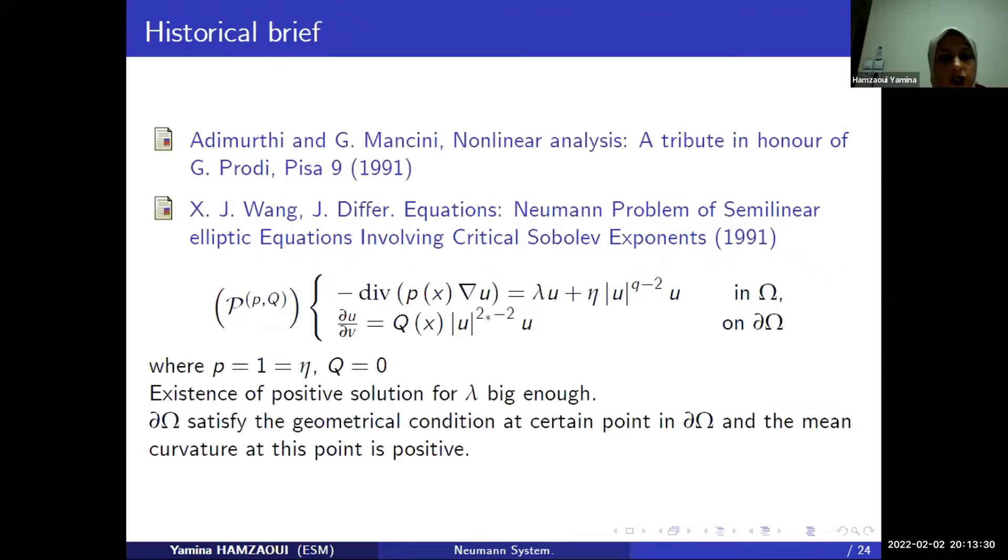The major difficulty of this kind of problem is that the critical exponent of Sobolev in the sense that it is a hinge value on which the injection is no longer compact, then the question of existence of positive solution is delicate. In 1991, Adimurthi, Mancini, Yadava has treated this kind of problem, where the weight P is a constant, Q equals zero. They have proved the existence of positive solutions for lambda big enough, and some condition on the edge of omega that satisfy the geometrical condition at a certain point in the edge of omega, and the mean curvature at this point is positive.